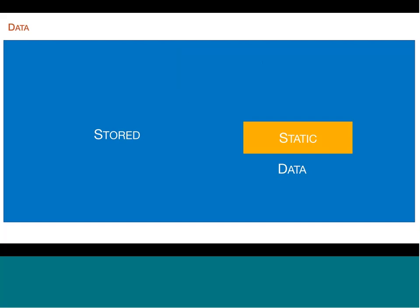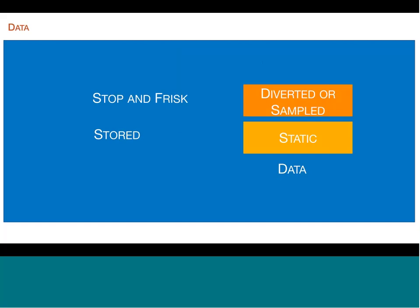On the data side — the streaming part — there's a similar hierarchy. Data in a database isn't going anywhere; it's static. A step higher is what I call 'stop and frisk' — data going from one place to another that we divert so we can analyze it, like taking water samples in an environmental study. At the higher level, we have data that is actually in motion, and what we want to do is analyze it while it's moving without changing it. That's where we get into the whole idea of streaming analytics.